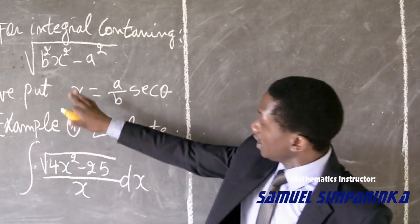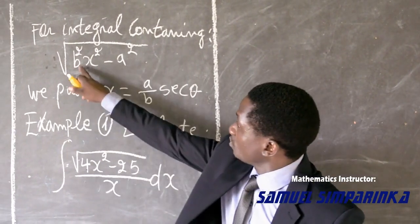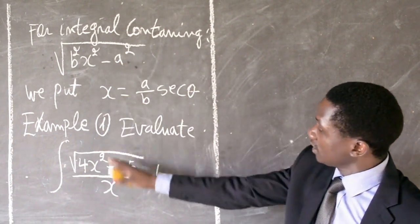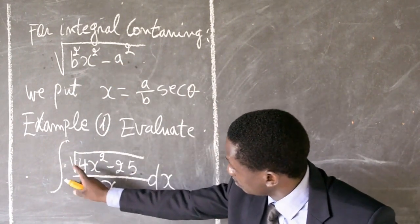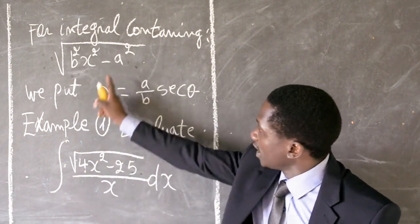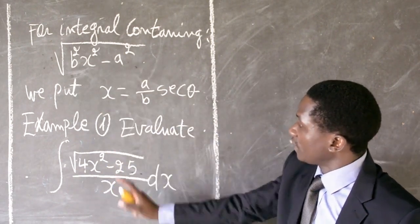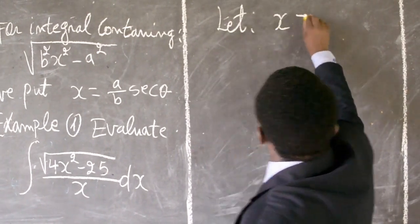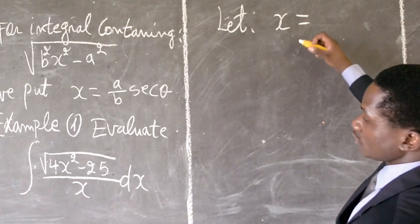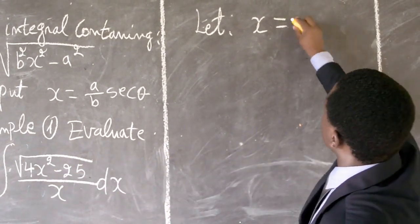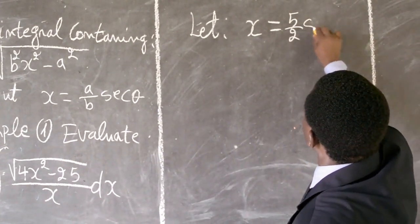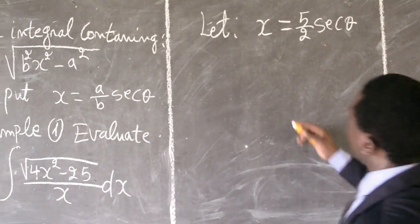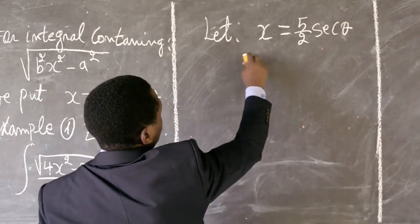Here we consider b² to be 4 and a² to be 25. Then we get that b becomes 2 and a becomes 5. So we let x equal (a/b), that is (5/2)sec θ. Then from this step, we continue as follows.